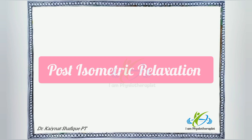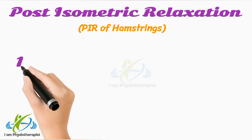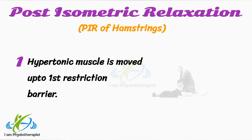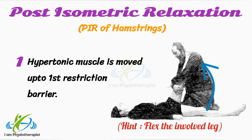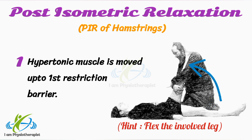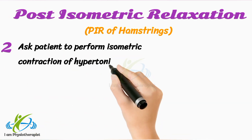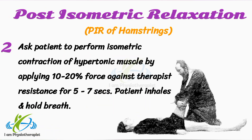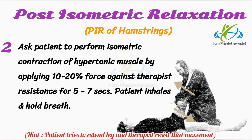To perform the post-isometric relaxation technique of METs, the hypertonic or shortened muscle is lengthened to the point where resistance to movement is first noted — there is no need to stretch the muscle. Then ask the patient to perform an isometric contraction of the hypertonic muscle by applying 10–20% of his total force, while the therapist applies resistance in the opposite direction for 5–7 seconds.